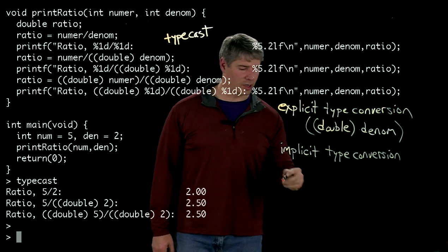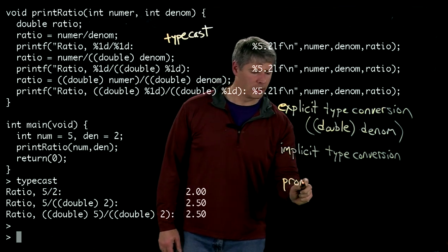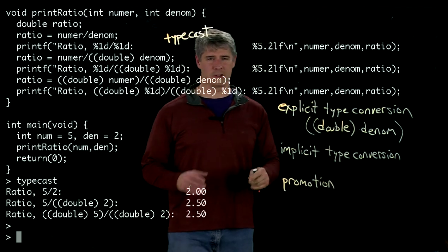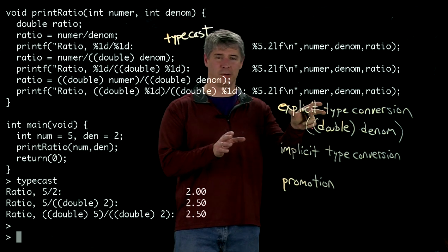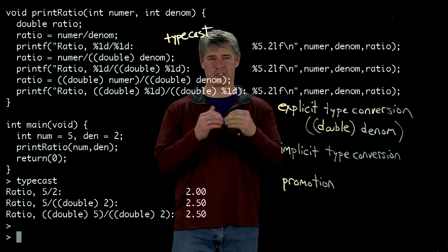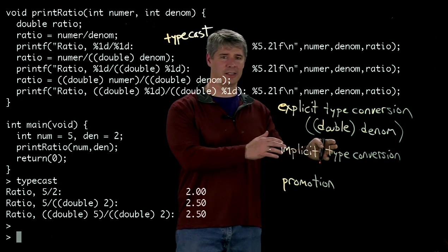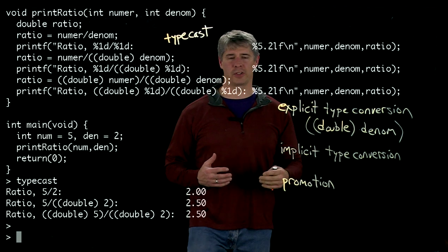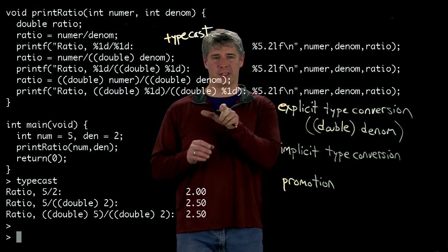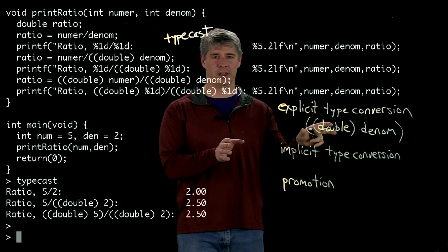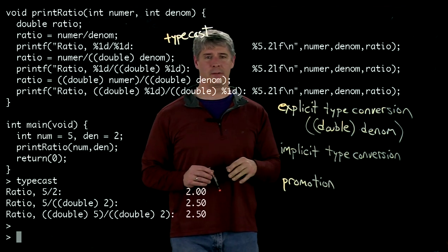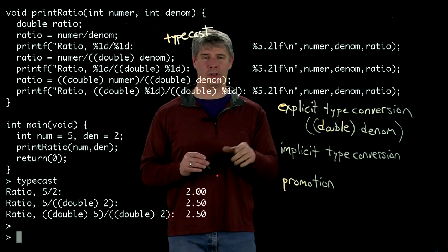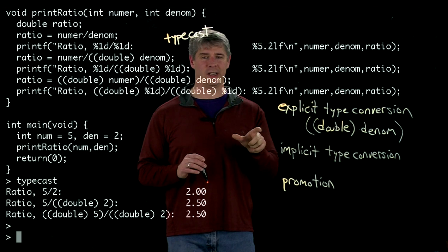Some type conversions are called promotions. A promotion is a type conversion where you take a smaller integer type and change it to a larger integer type, for instance, a char to an int or an int to a long int. Or for a floating point, it's where you go from a float to a double. It's called a promotion because every value that is representable in the smaller type is also representable in the larger type. On the other hand, when you have a conversion from an integer to a double, for example, it may be possible that you can no longer represent the integer exactly anymore.